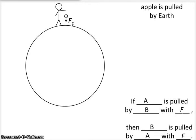Newton's Third Law says if you have two objects, A and B, and if A is pulled by B with the force F, then B is pulled by A with the force F. In this case, what are objects A and B? Apple and earth. If the apple is pulled by the earth with the force Fg, then the earth is pulled by the apple with the force Fg. You just switch the order of the two.